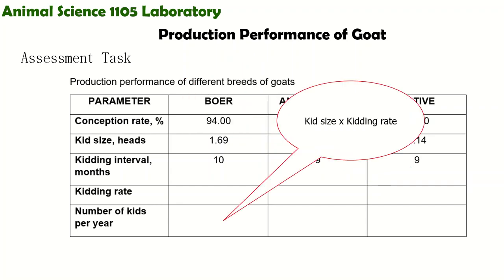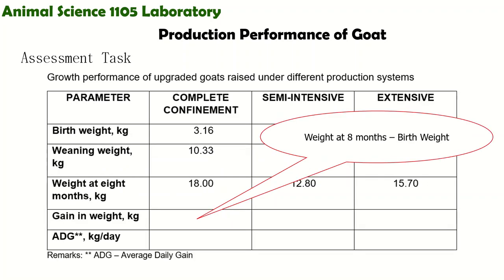For the number of kids per year — that is, how many kids or young goats are born within one year — the formula is kid size times kidding rate. The kidding rate used here is the value you computed earlier for each breed.